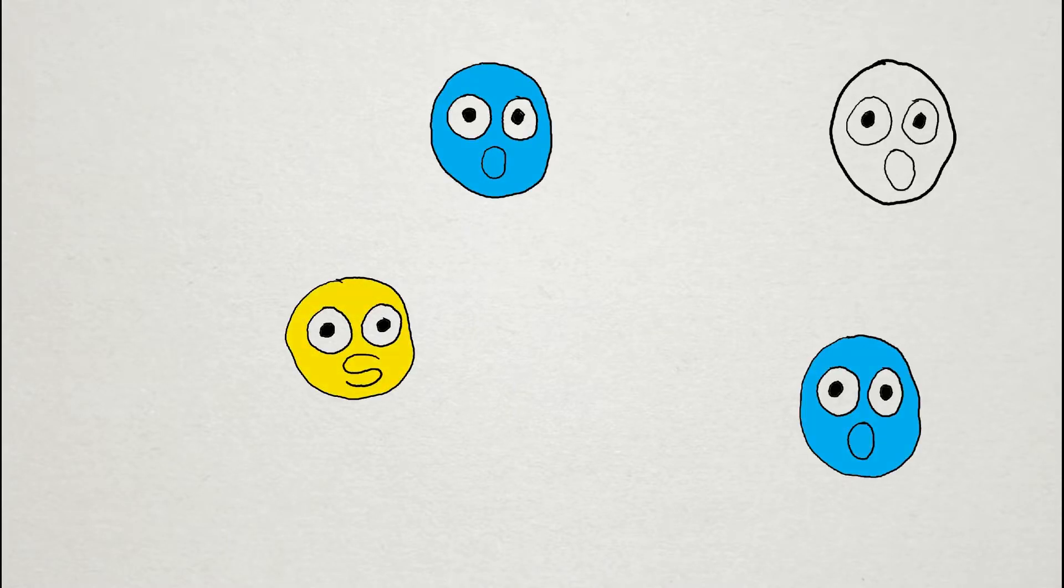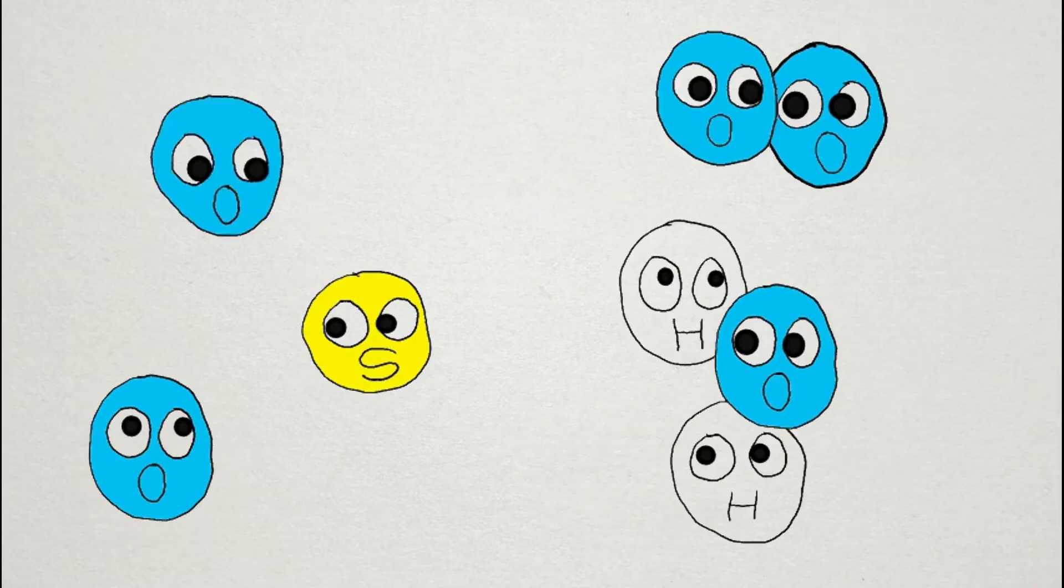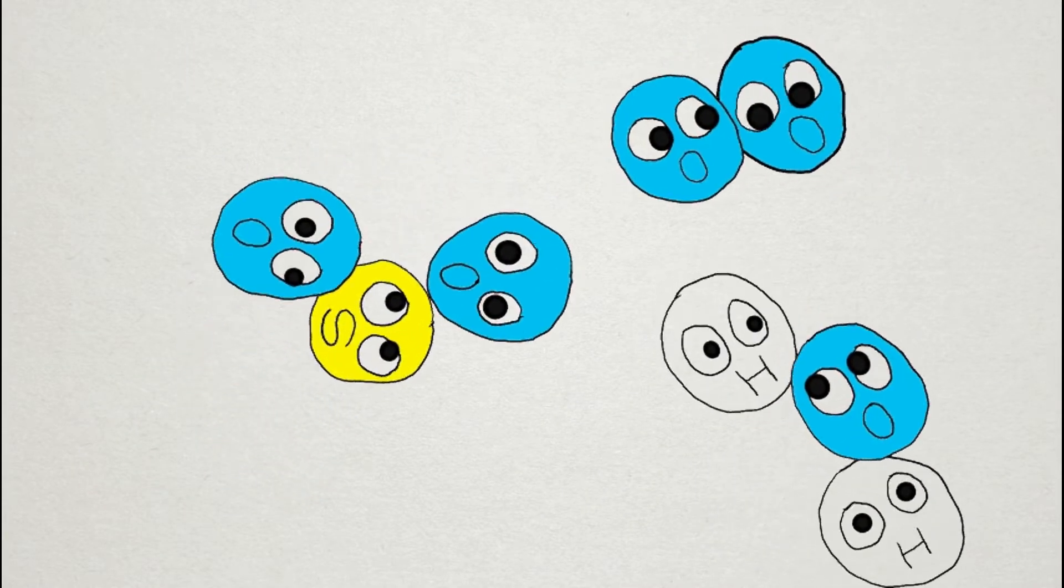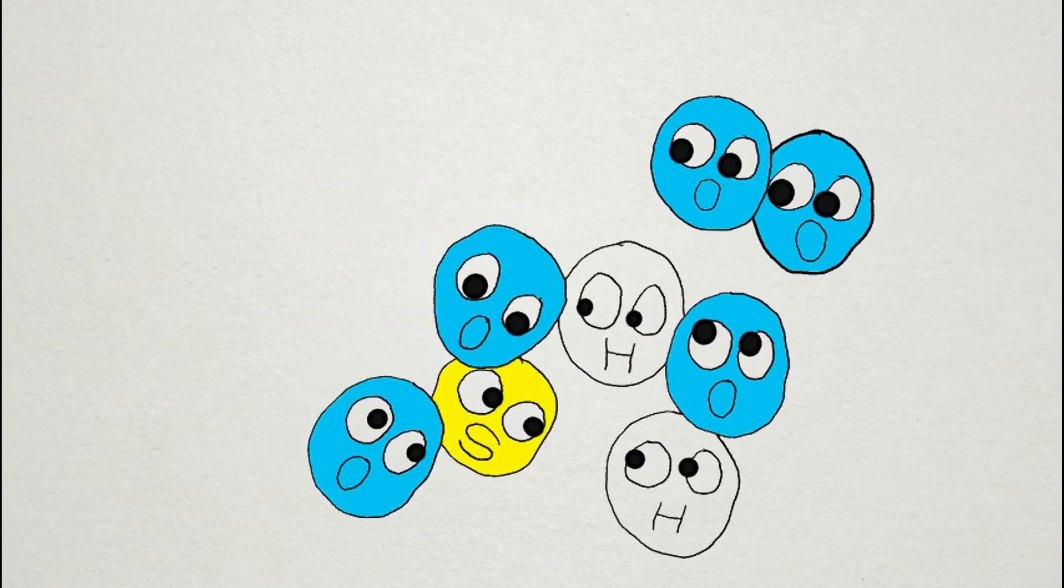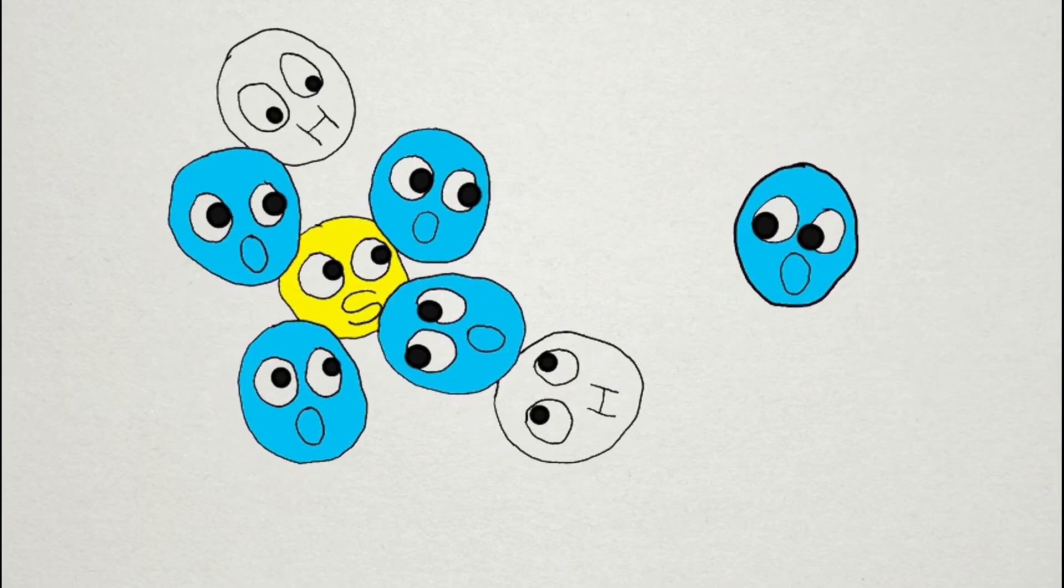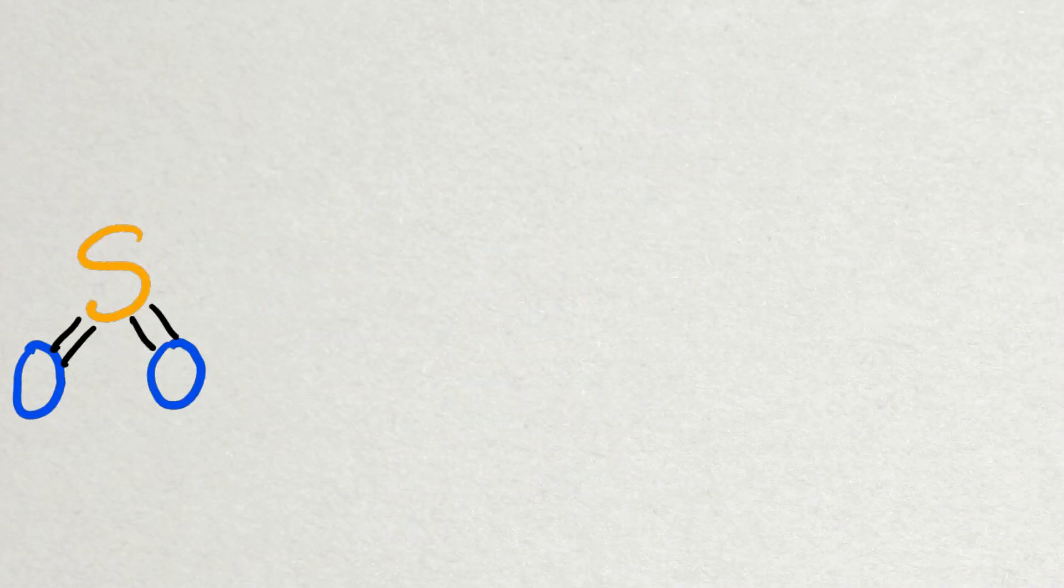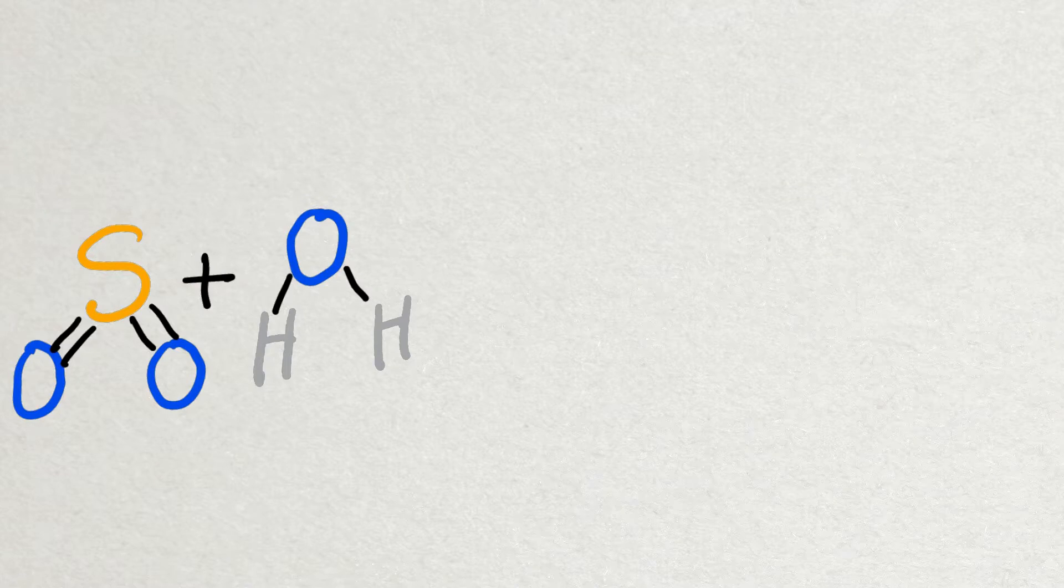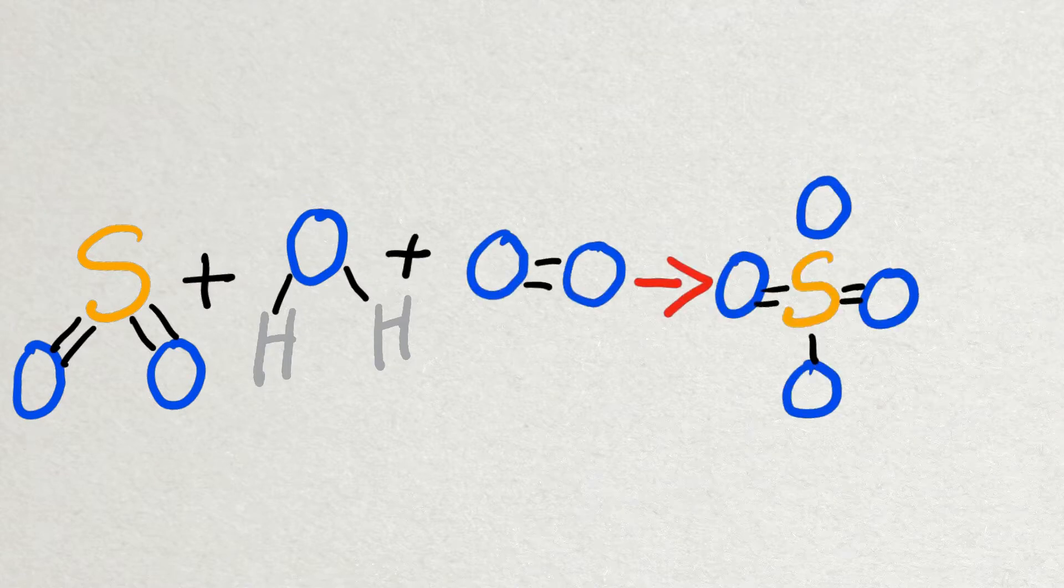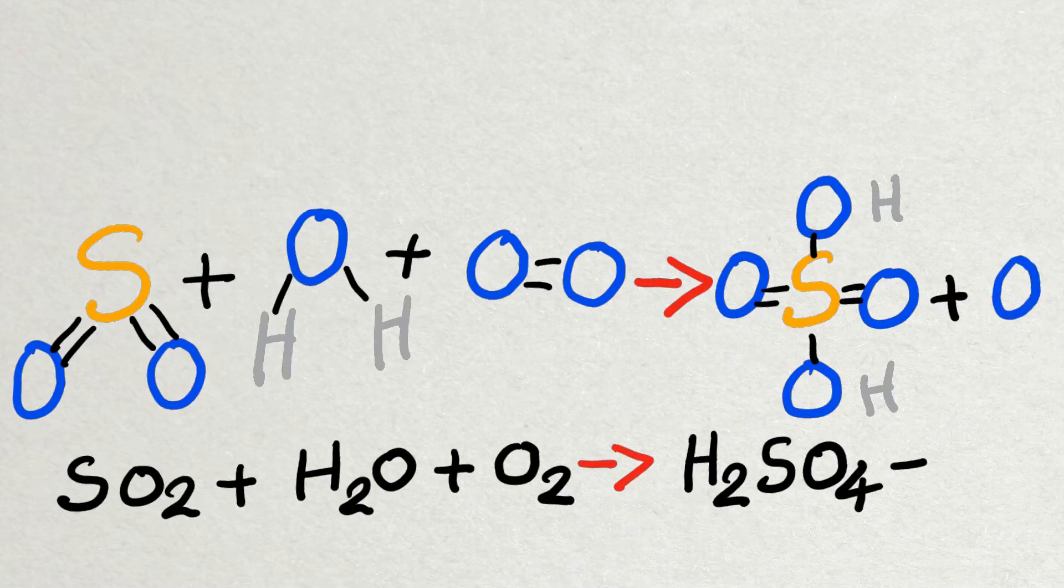Let's take a closer look at sulfur dioxide turning into sulfuric acid. When sulfur dioxide comes into contact with water vapor and oxygen gas, a chemical reaction happens, resulting in sulfuric acid. Here is a much closer look. Sulfur dioxide, SO2, combined with water, H2O, and oxygen gas, O2, resulting in sulfuric acid, H2SO4, and an extra oxygen atom.